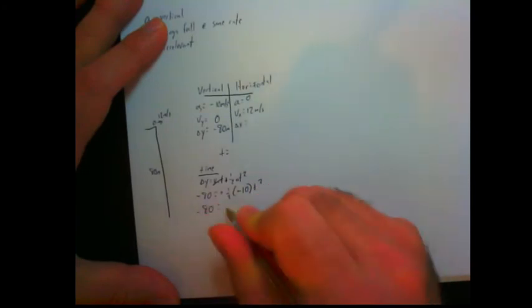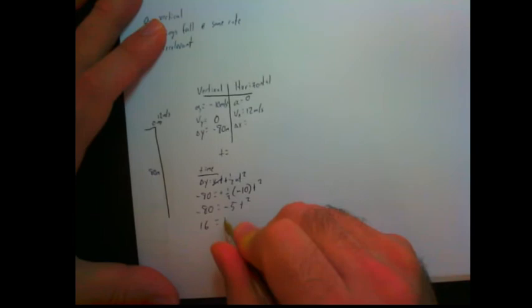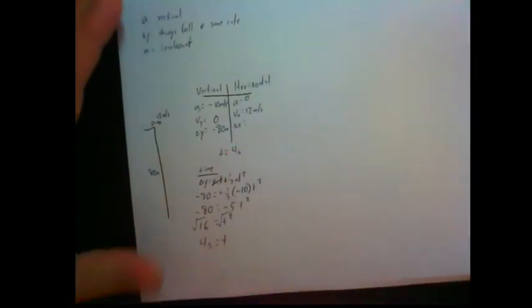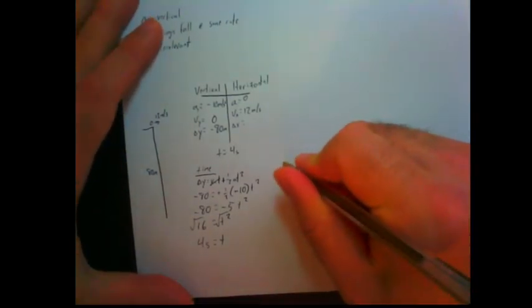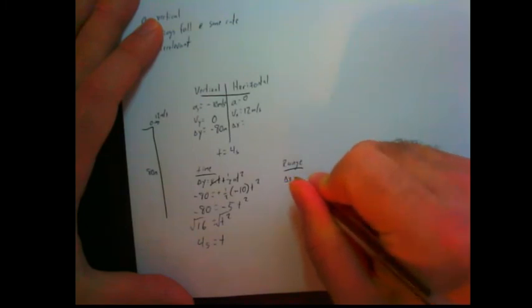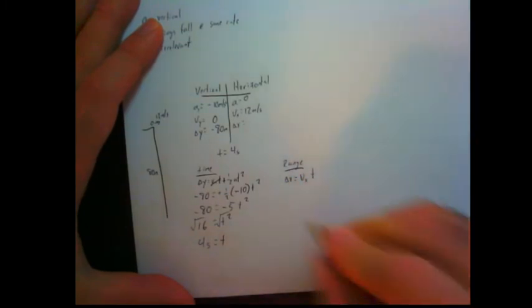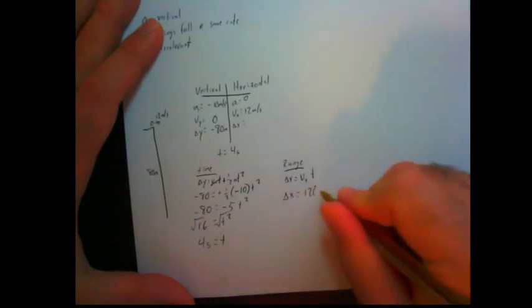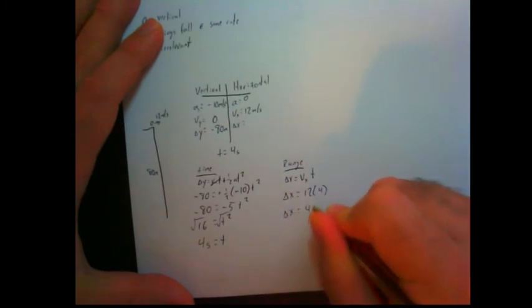So negative 80 equals negative 5 t squared. 80 divided by 5 is 16, and the square root of 16 is 4 seconds. So let's put that up in our data table. Now to find out range, we're going to take our horizontal velocity and multiply it by the time in the air. So the range equals horizontal velocity, which is 12, times the time, which is 4, 48 meters.